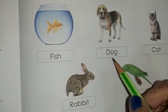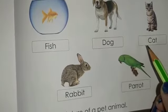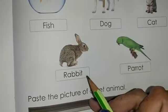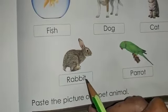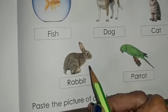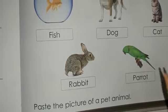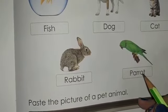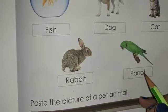Next is dog. Dog is a pet animal. Next is cat. Cat is also a pet animal. Next is rabbit. Rabbit is also a pet animal. And many people love to keep rabbit, white rabbits at their home. Parrot.